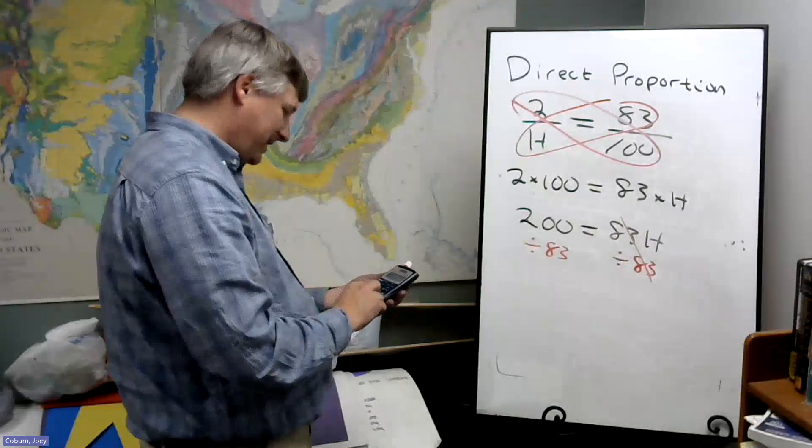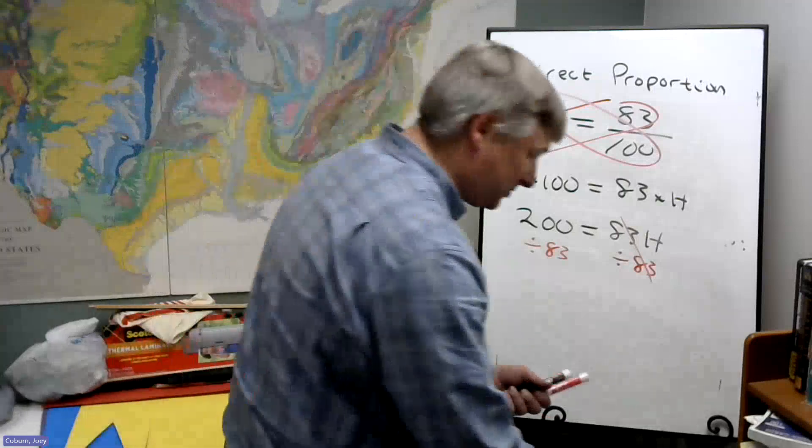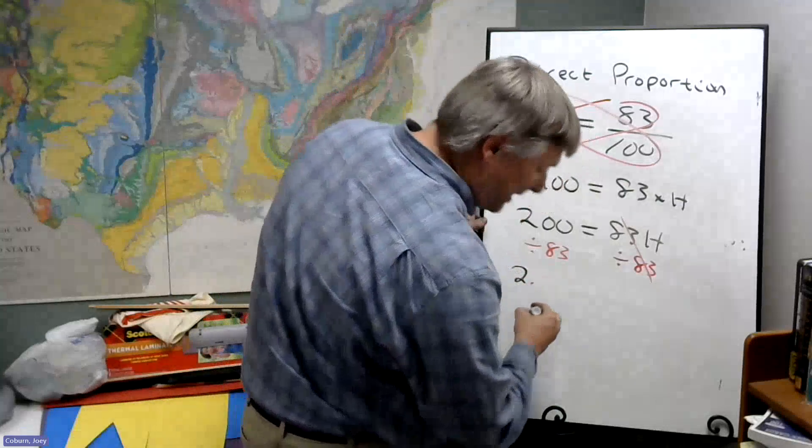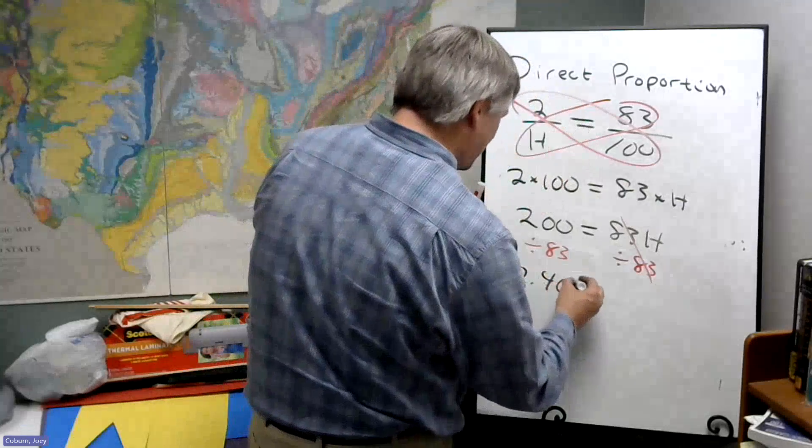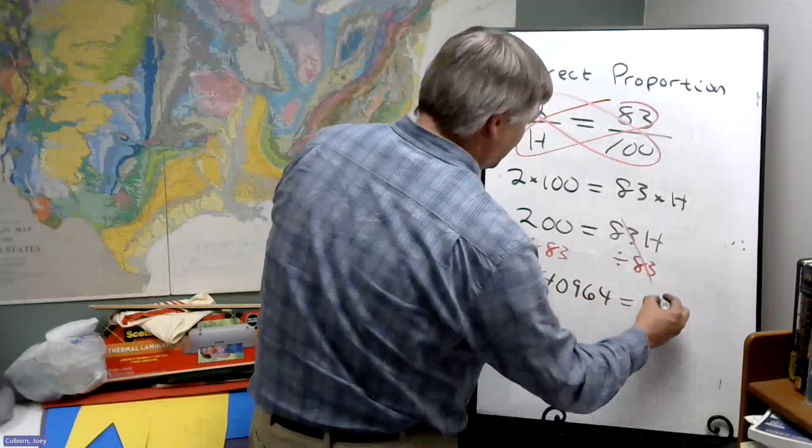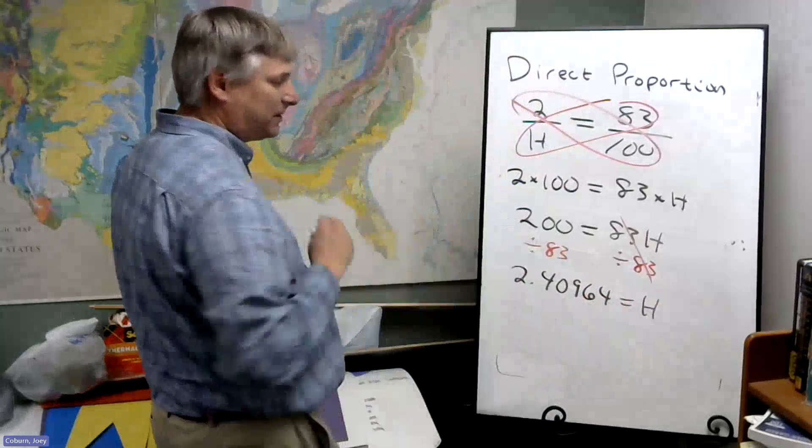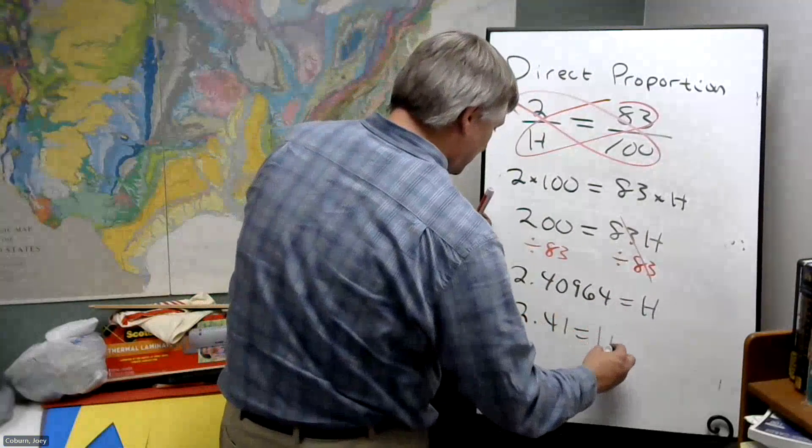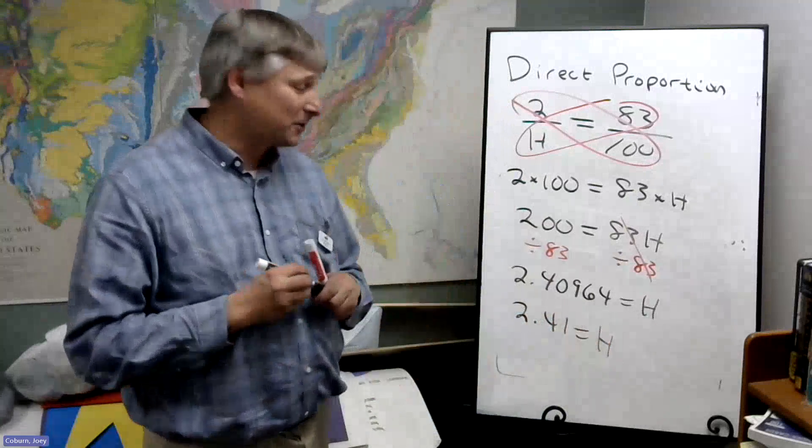200 divided by 83 is about 2.0964 equals H. Or if I round to the hundredths place, 2.41 or 2 and 41 hundredths.